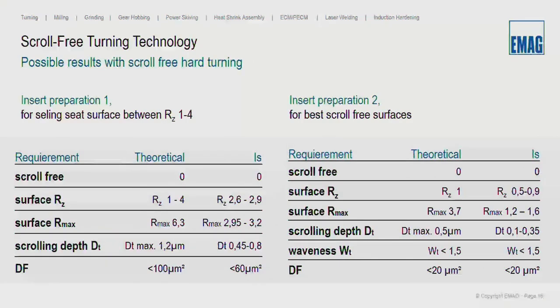Depending on the surface requirement, the tool supplier needs to prepare the insert in different ways. For example, a sealing seat surface needs to be between Ra 1 and Ra 4, with surface requirement Ra-max 6.3 and scrolling depth DT limited to 1.2 micrometers. This is possible with special inserts. With one insert, we had results between Ra 2.6 and Ra 2.9, with the scrolling depth DT and cross section inside the limits.